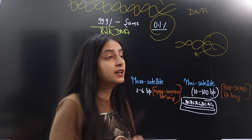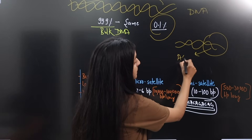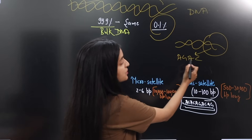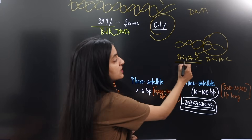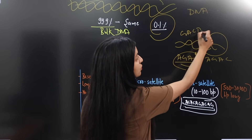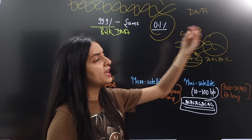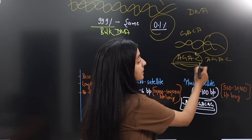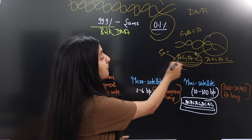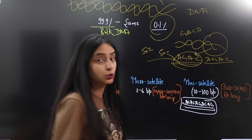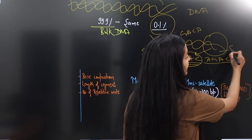This 0.1% part consists of repetitive sequences. For example, a sequence like A, G, A, C is repeated many times. In my 0.1%, I might have A, G, A, C, while you might have a different sequence, or the same sequence repeated a different number of times — say 500 times versus 502 times. So in every person, the 0.1% of DNA is completely different. We call this region Satellite DNA.